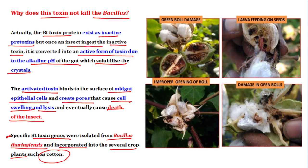Originally, Bacillus thuringiensis bacteria were dissolved in a solution and sprayed onto crops. When insects ate these plants, they ingested the spores and ultimately died. But with the advent of recombinant DNA technology, the Bt toxin gene from the bacteria was introduced directly into the plant, causing the plant itself to produce the insecticidal protein, creating a pest-resistant plant.